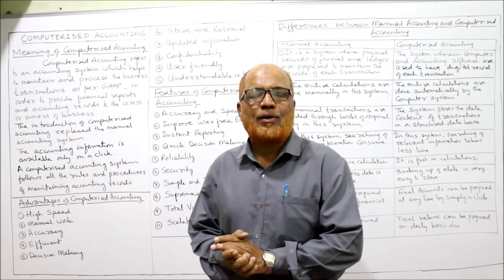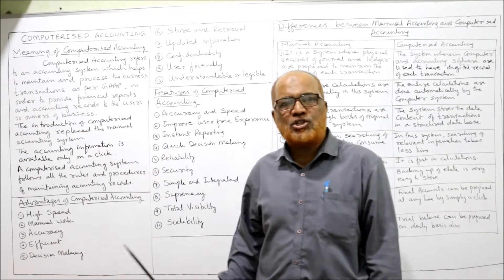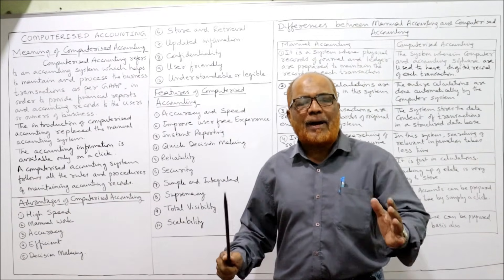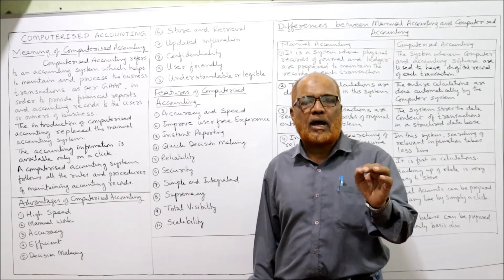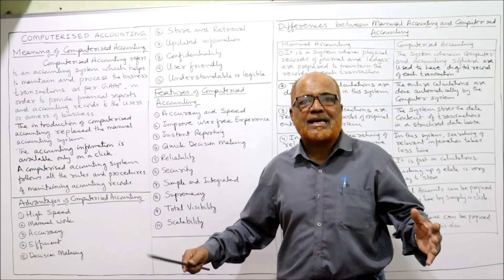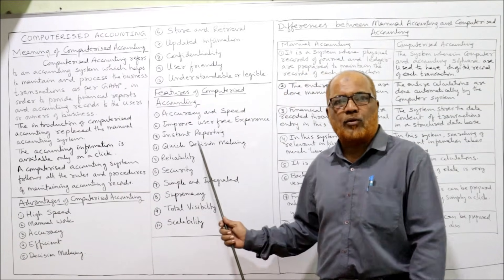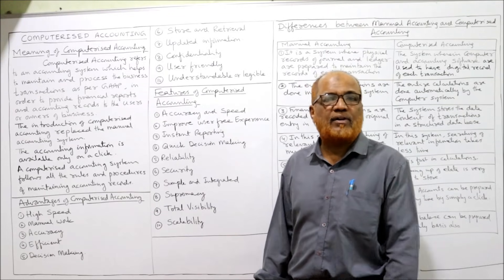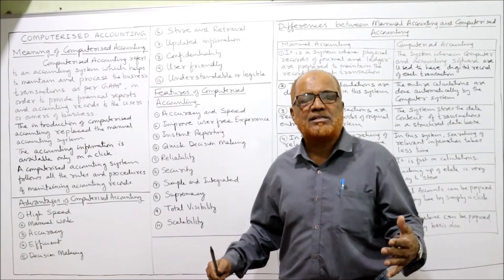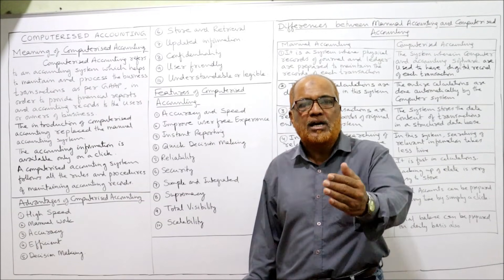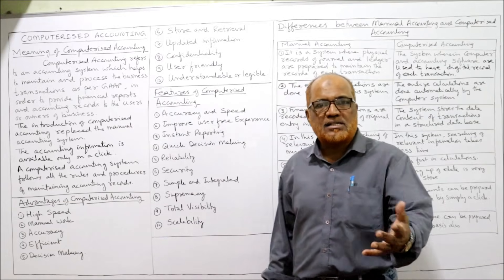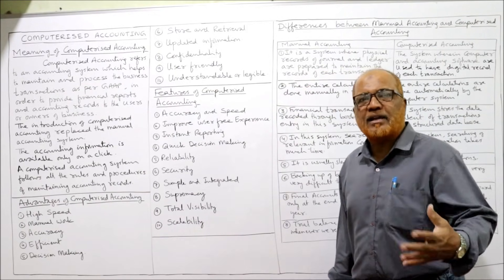Now I'm going to explain the features of computerized accounting. The first feature is accuracy and speed — compared to manual accounting, computerized accounting produces more accurate reports and processes transactions at very high speed. A large number of transactions can be processed quickly. The second feature is improved user experience — the system is user-friendly, so a person can easily learn and adapt to computerized accounting without much prior experience.